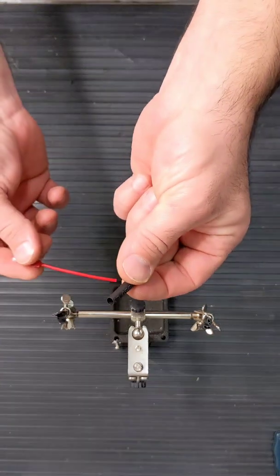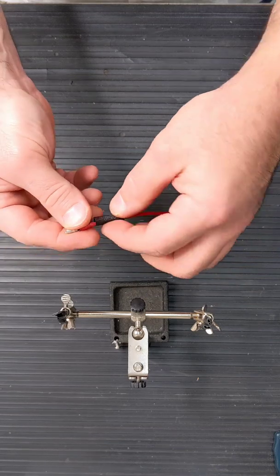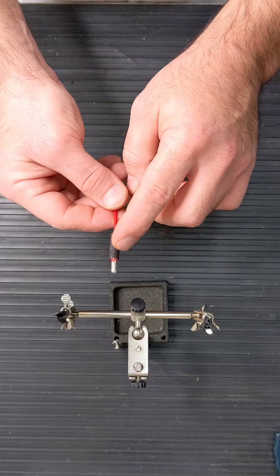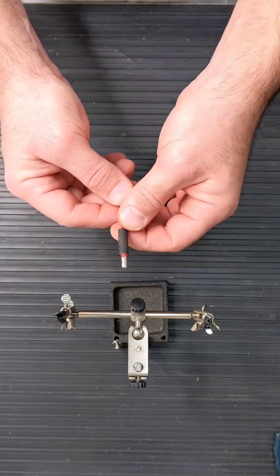Your next step is take the black heat shrink and put it over the wire. Now, when you're working on an e-bike, you're going to have to put the heat shrink on prior to soldering or putting a connector on.